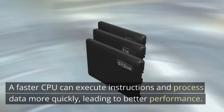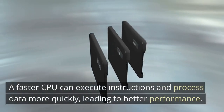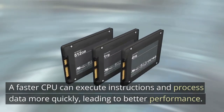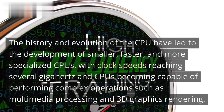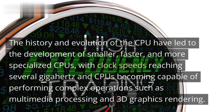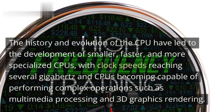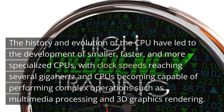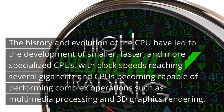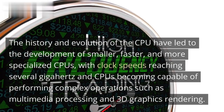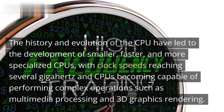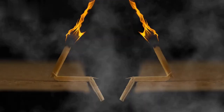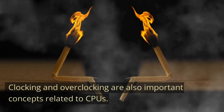A faster CPU can execute instructions and process data more quickly, leading to better performance. The history and evolution of the CPU have led to the development of smaller, faster, and more specialized CPUs, with clock speeds reaching several gigahertz and CPUs becoming capable of performing complex operations such as multimedia processing and 3D graphics rendering.